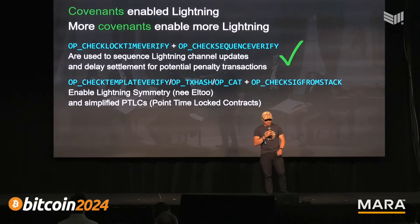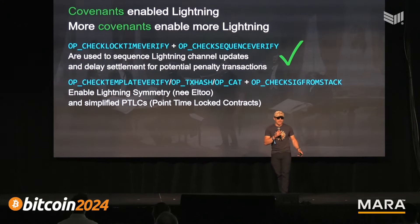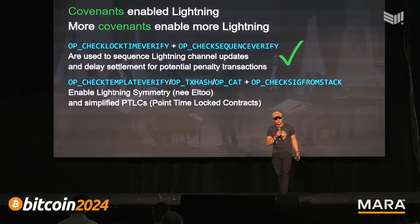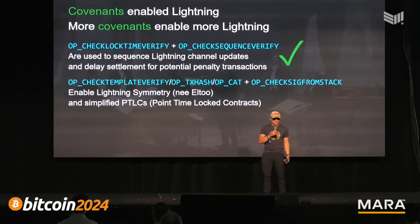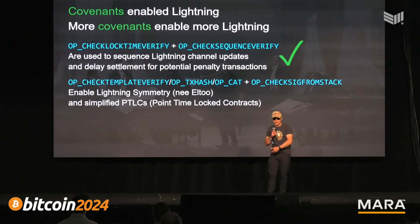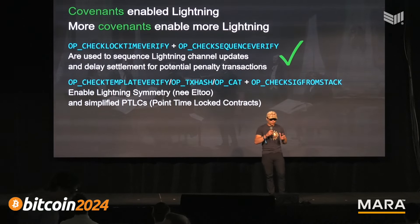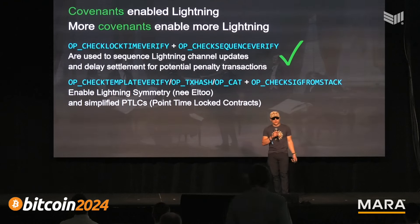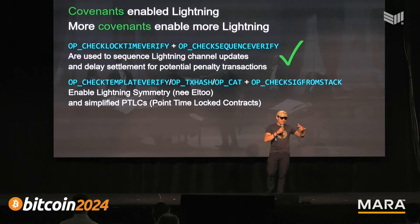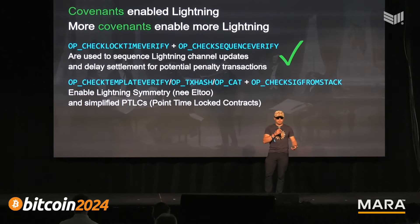More covenants will enable more lightning. For example, if we had check template verify, or txhash, or CAT plus checksig from stack, we would get lightning symmetry — otherwise known as LN-Symmetry. This is a way of making lightning channels easier to maintain: you don't need new channel backups every time there's an update to the channel. Even with an old backup, the worst that can happen is that you close to the latest correct state. The same pairs of opcodes would also enable point time locked contracts with simplified scripts.